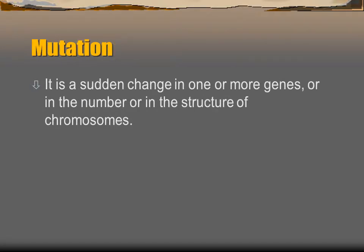Finally, we discuss mutation. Mutation is a sudden change in one or more genes — a change in the number, structure, or arrangement of genes or chromosomes. This concludes the genetics chapter, in which we discussed genetics terms, Mendelian experiments, Mendel's laws, genes and variations, alleles, dominant and recessive alleles, and laws of inheritance.